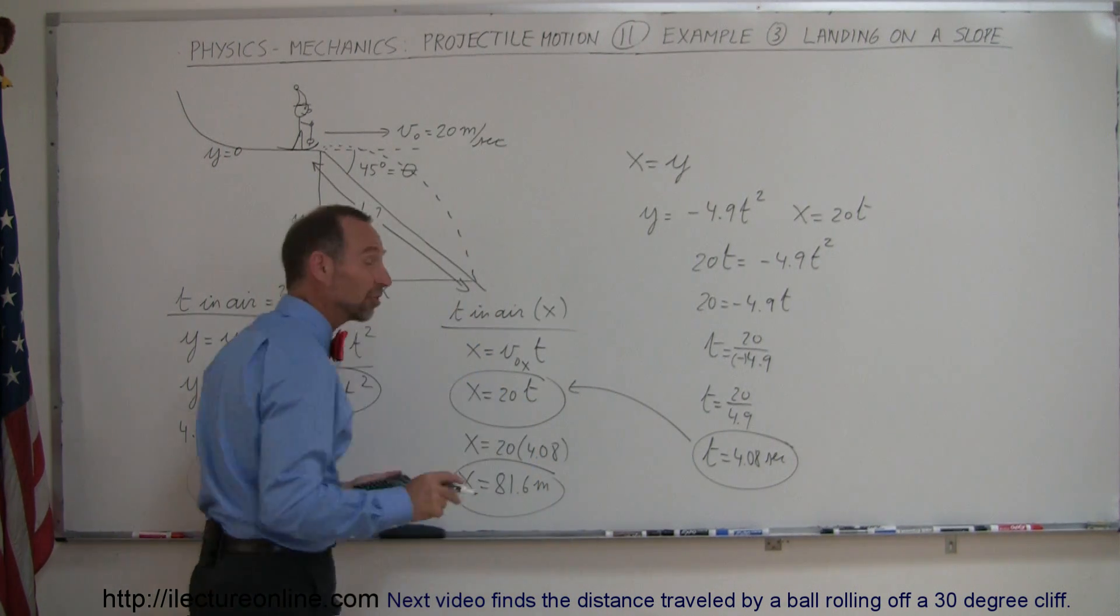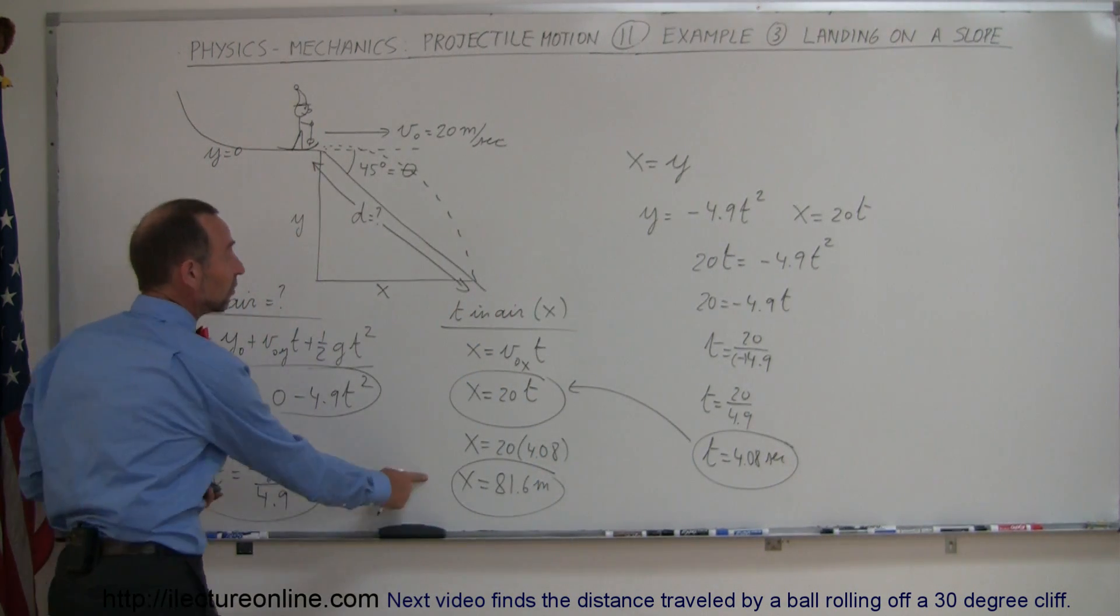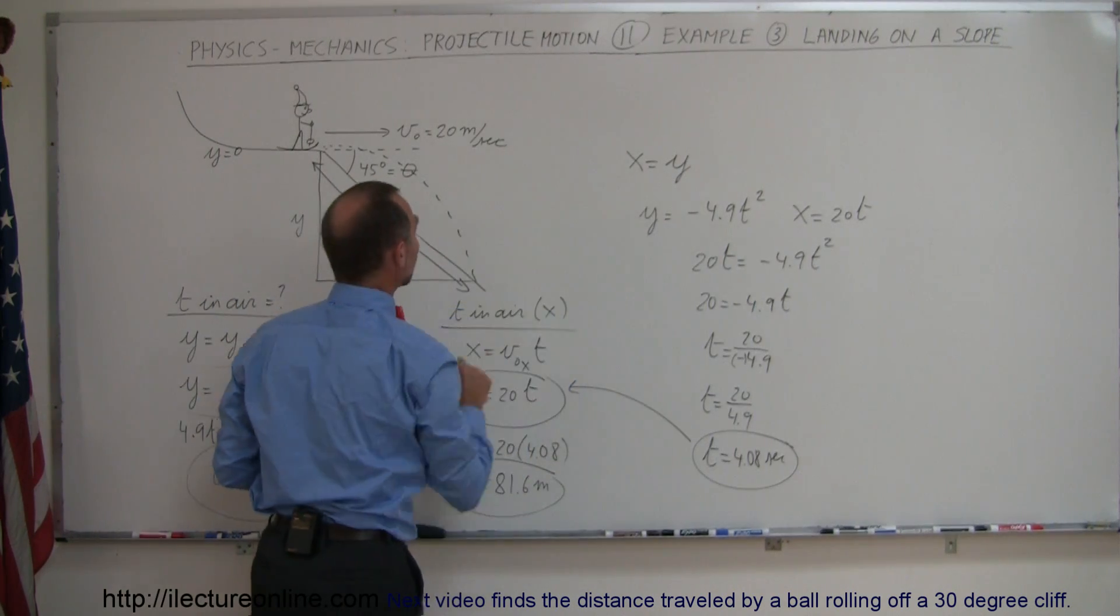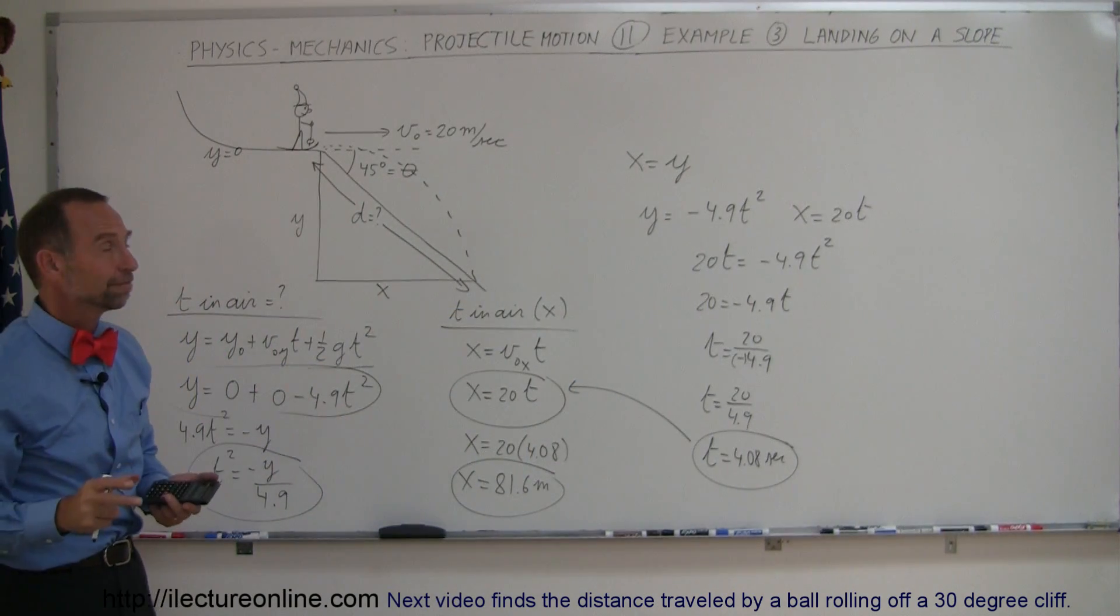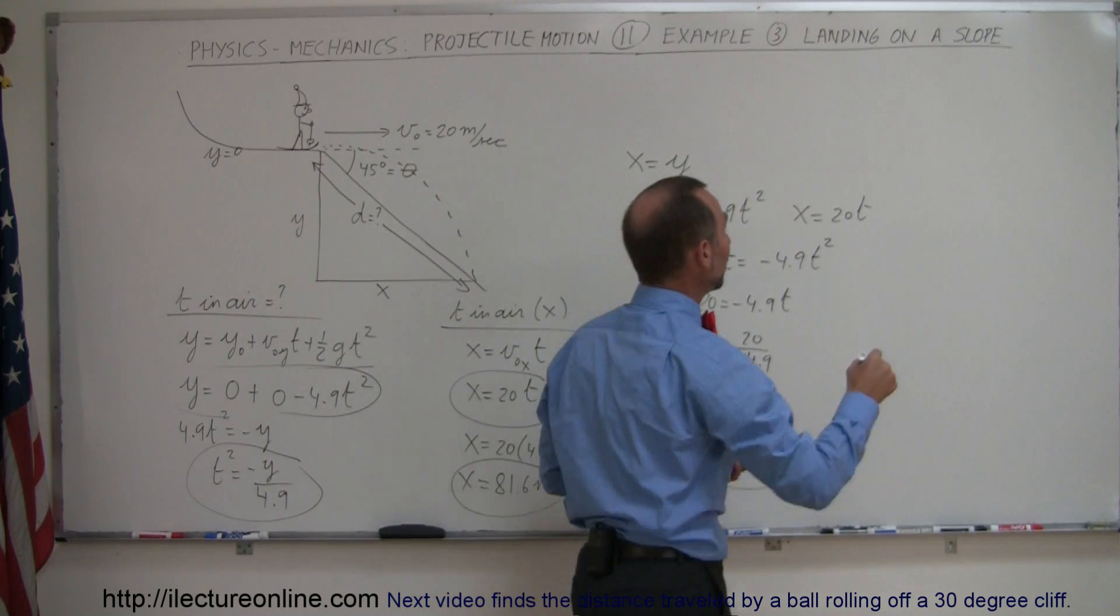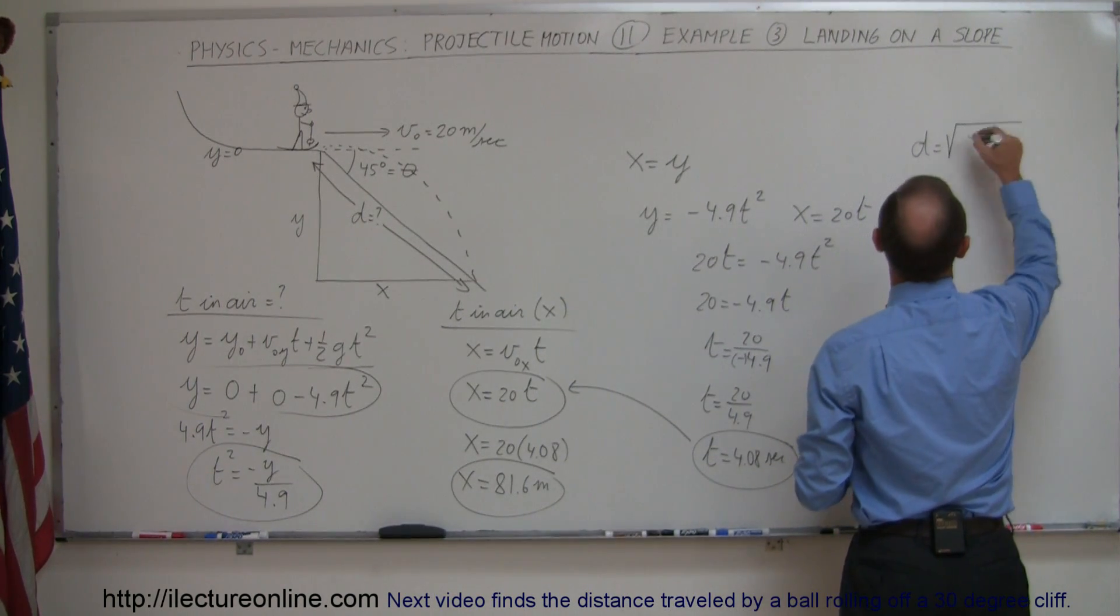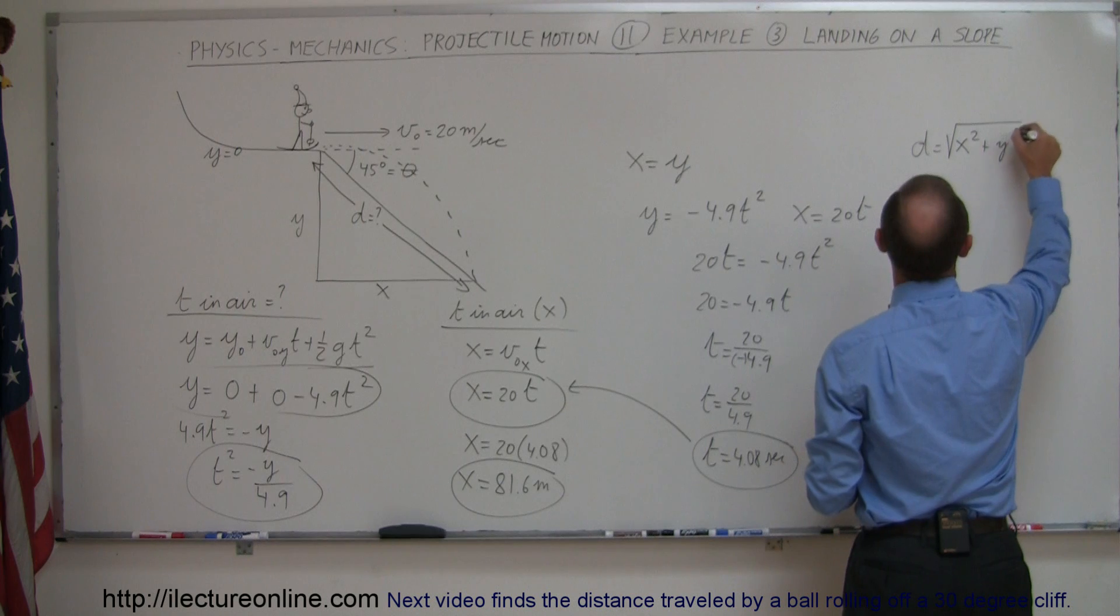Okay, that tells us the distance in the x direction. That also tells us the distance in the y direction, because x equals y, but that doesn't tell us d yet. But again, using Pythagorean theorem, we can say that d is equal to the square root of x squared plus y squared,